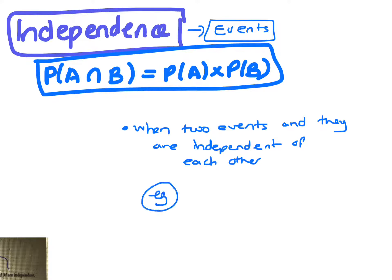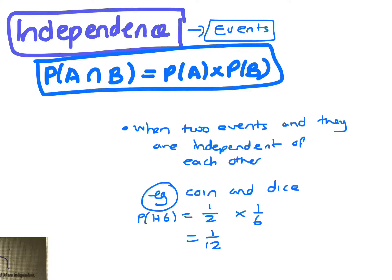An example of things that are independent would be if you threw a coin and a dice. So throwing a coin — if you wanted the probability of getting a head and a six, a coin is one in two, getting a six would be one in six. One does not affect the other. It doesn't matter what you get on the coin; that doesn't affect what you get on the dice.